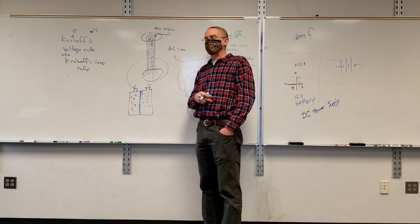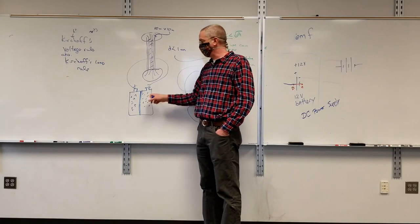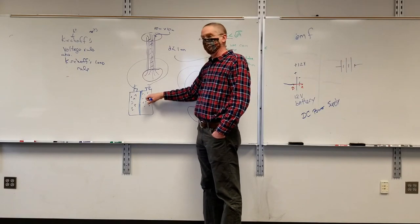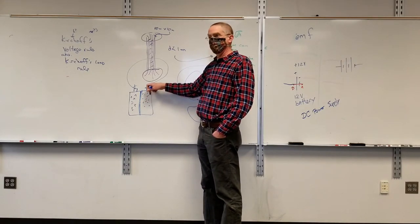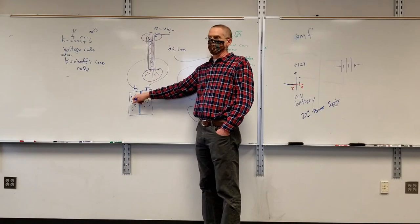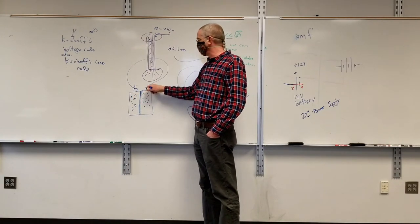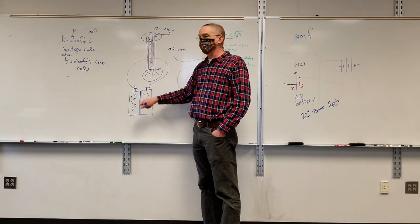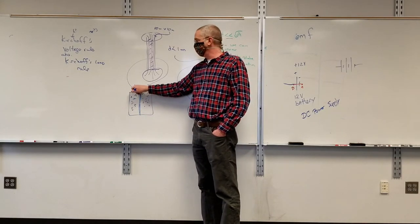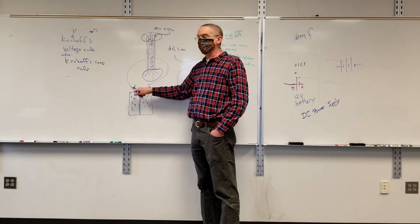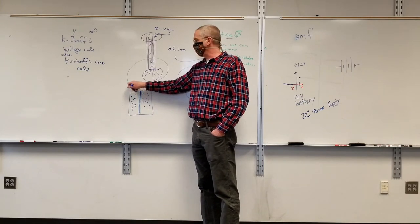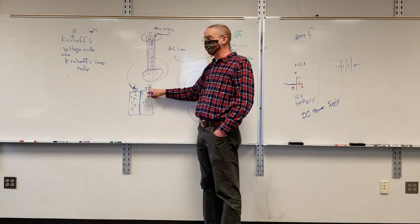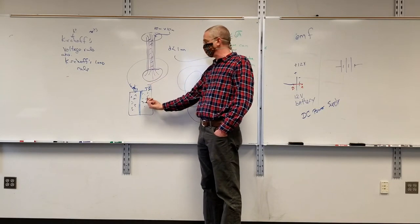Once the electrons — they hate each other, they're trying to get away from each other — you've now given them a path to get over to where they want to be. So the electrons will start to move. This electron over here will move in there, creating a hole, and then another electron will pop into that hole, and eventually the hole will get over to here, and then these electrons will start to come out.